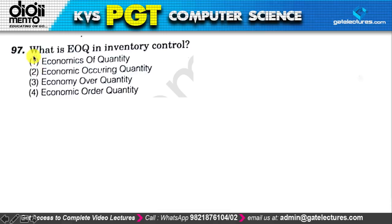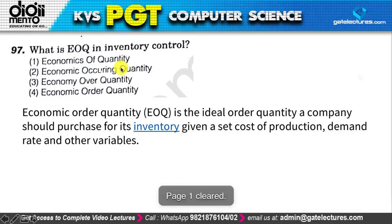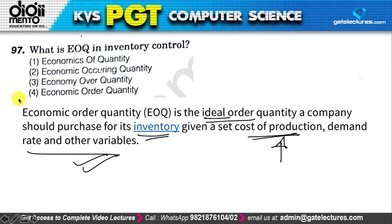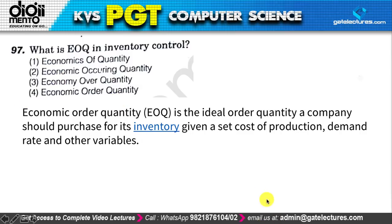Question 97 is straightforward: EOQ stands for Economic Order Quantity. It is the ideal order quantity a company should purchase for its inventory, given a set of production costs, demand rate, and other variables — in other words, how much to order/produce based on production cost and demand. Very straightforward, single-definition term.